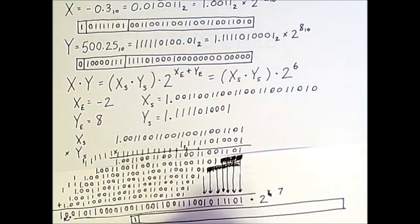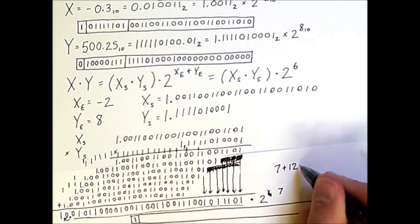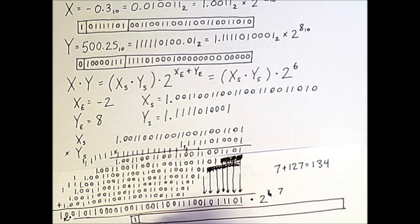The next 8 bits are the biased exponent. So we take our actual exponent, add 127 to it to get 134. So here we need the biased exponent and it will be 1 0 0 0 0 1 1 0. That's 134 in binary.